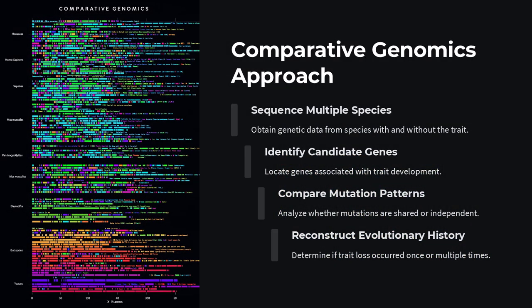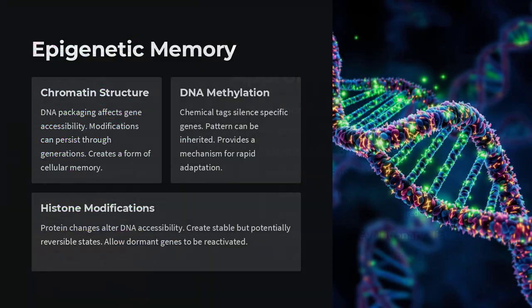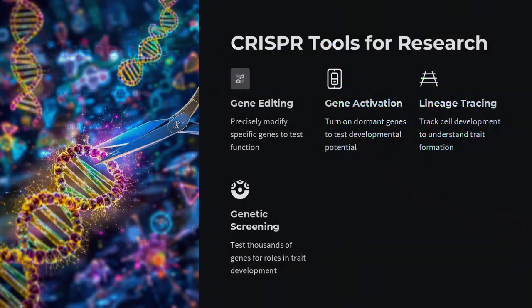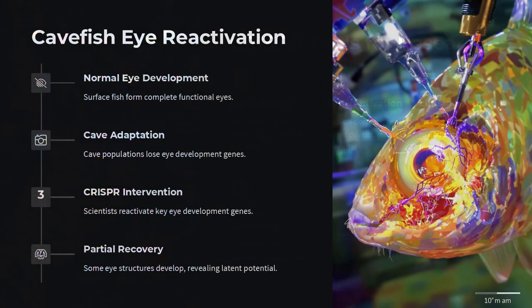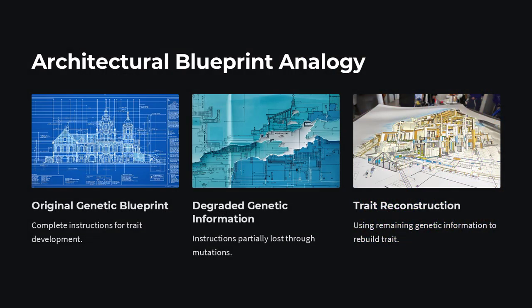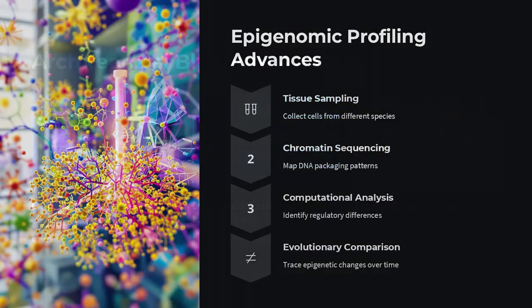At even finer scales, epigenetic regulation and regulatory RNA molecules can modulate trait expression without permanent genomic change, enabling rapid toggling between more and less complex phenotypes. Environmental triggers like prolonged darkness or parasitic lifestyles can initiate reversible down-regulation of developmental programs, producing plastic pseudo-reversals that only become genetically fixed when conditions persist long enough.